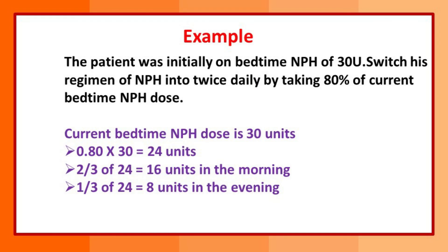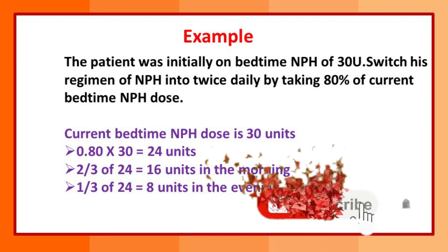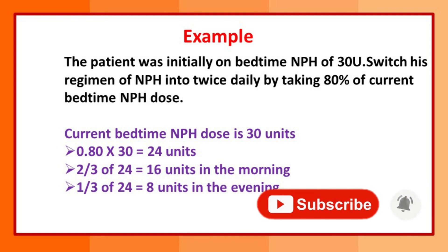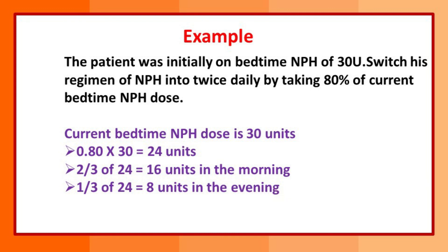The answer: the current bedtime NPH dose is 30 units. 80% of 30 units = 24 units. Now divide using the two-thirds/one-third rule: two-thirds of 24 = 16 units in the morning, and one-third of 24 = 8 units in the evening. Remember: two-thirds dose always goes in the morning as basal (background) insulin, and one-third is the bolus insulin required before meals.